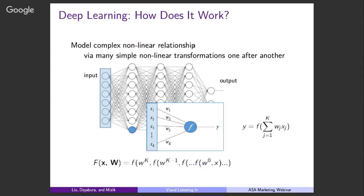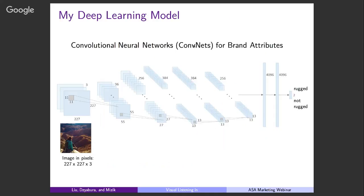Deep learning has been used in many industries. I worked at Google before, and at that time deep learning was not quite popular, but I heard that many methods have now been replaced with deep learning models because they perform better. To solve my problem, I trained a type of neural network called a convolutional neural network, which is a type of neural network designed for image-related tasks. The inputs to my network are images in pixels, and the output of the final layer are two outputs — for example, whether the image is rugged or not rugged. It's a binary classification. The difference between this network and a standard one is that every node in a layer is connected to just a local area in the previous layer, mimicking how the human vision system works — at every moment, we only focus on a small region of what we see.